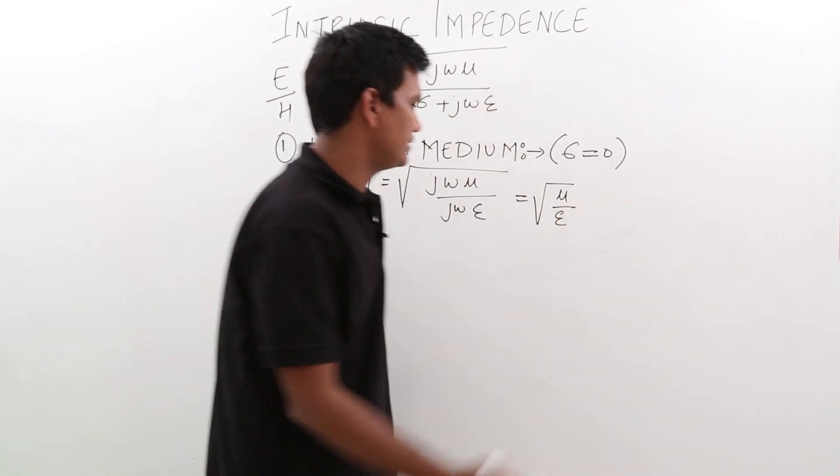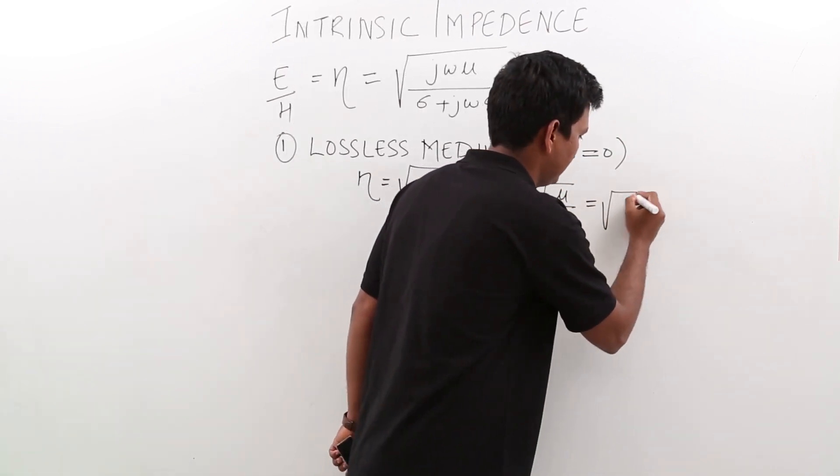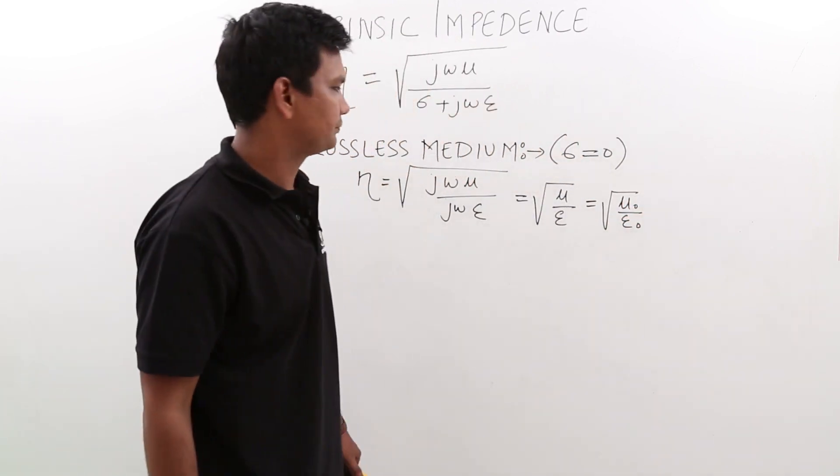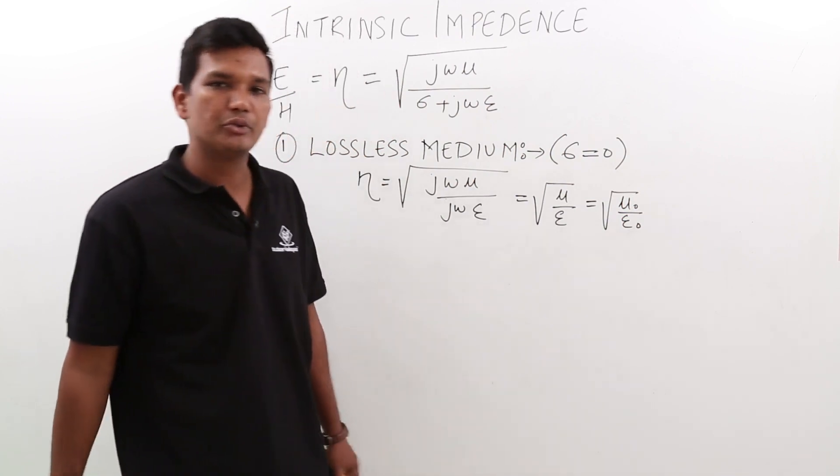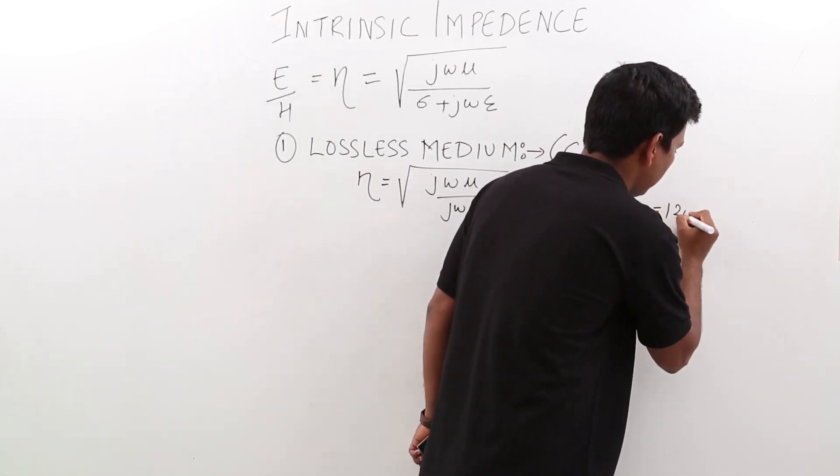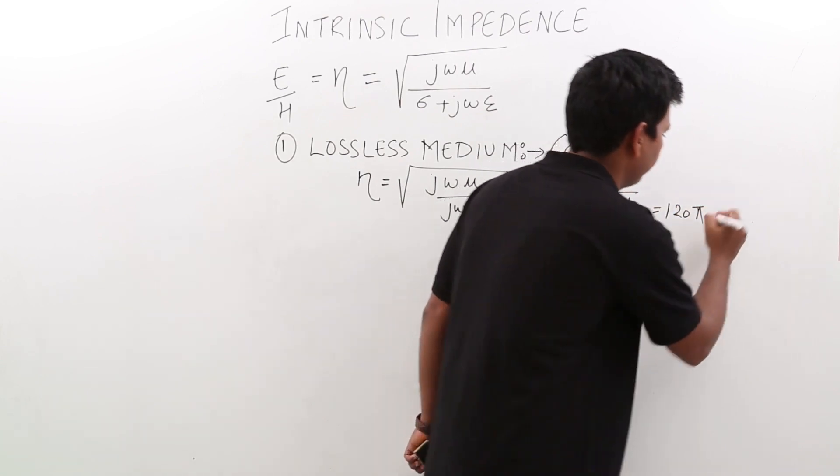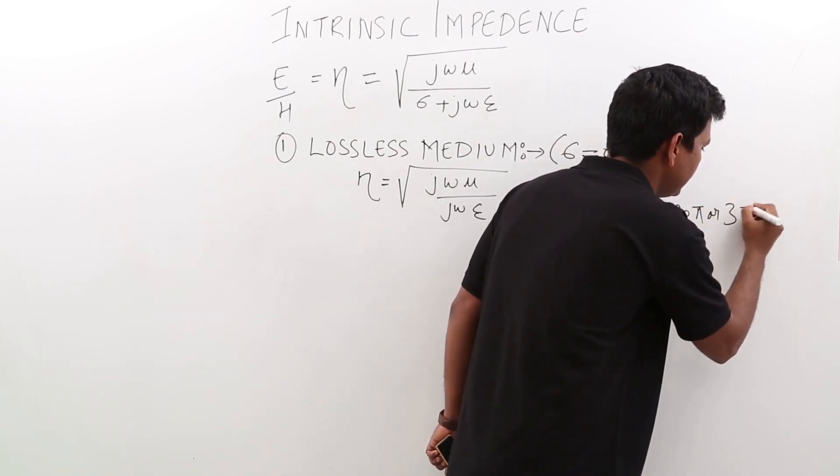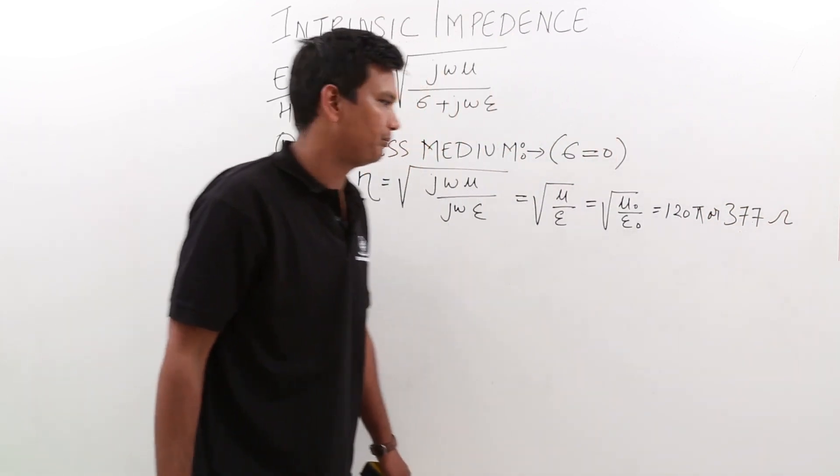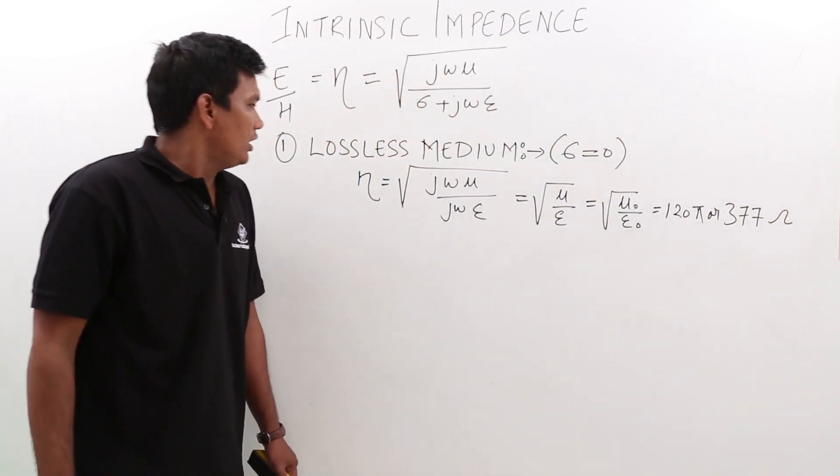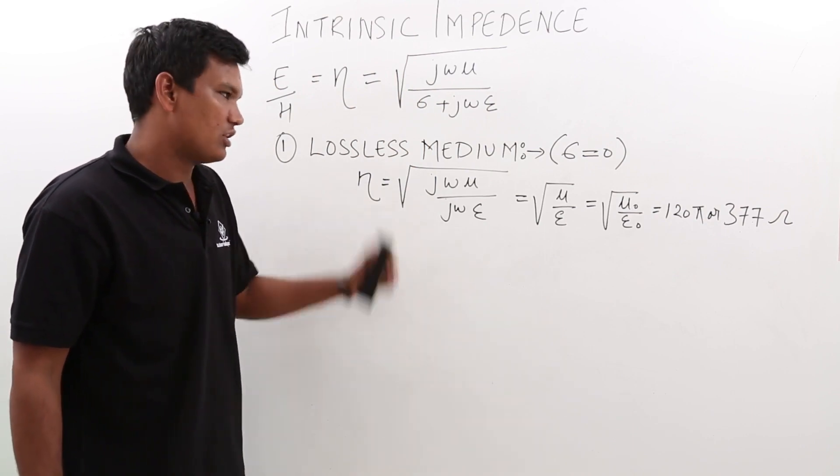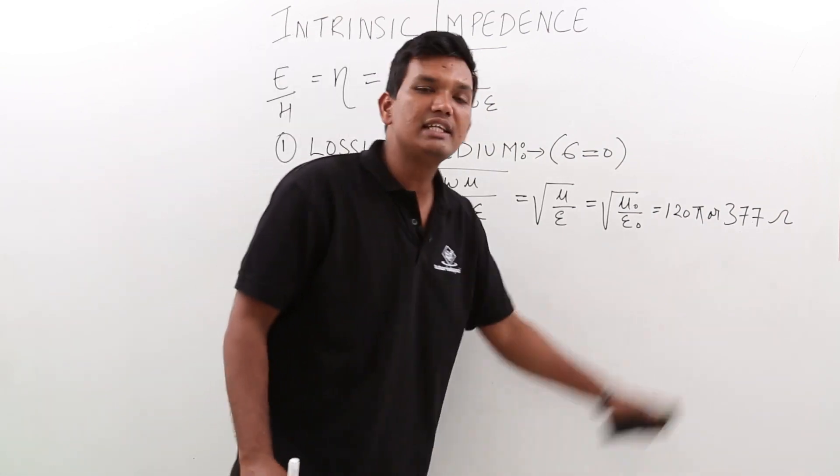In free space, this becomes mu naught by epsilon naught. When you substitute mu naught by epsilon naught, you get a value of 120 pi or 377 ohms. As it is an impedance, I'm giving the unit as ohms. So we have found the impedance offered in a lossless medium: 377 ohms.